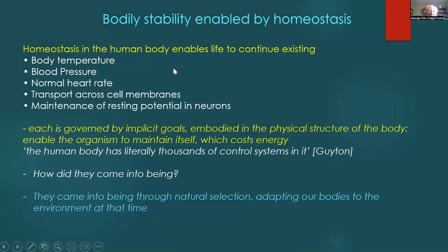Bodily stability is enabled by homeostasis, which governs body temperature, blood pressure, heart rate, transport across cell membranes, and resting potential of neurons. Each is governed by implicit goals embodied in the physical structure of the body, enabling the organism to maintain itself at a cost of energy. The human body has literally thousands of control systems, which came into being through the process of natural selection adapting our bodies to the environment.